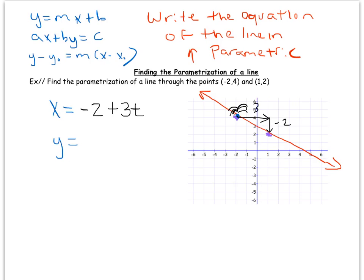For the y-coordinate: it started at four, and in those same t seconds it moved down two. So we get y equals four minus two t. And that's it — that is the equation of this line in parametric form.